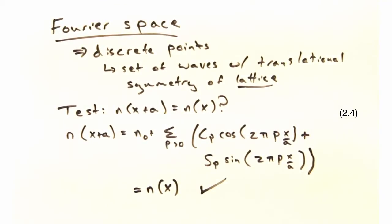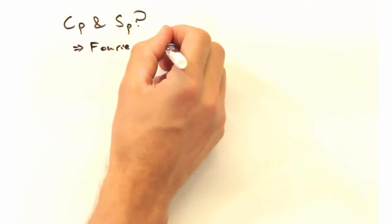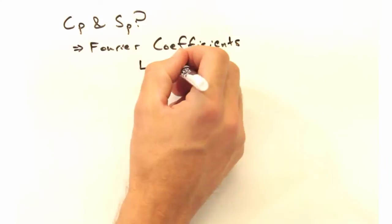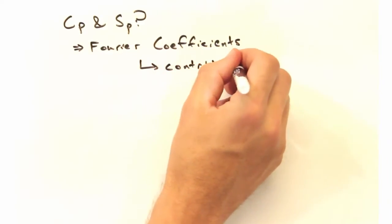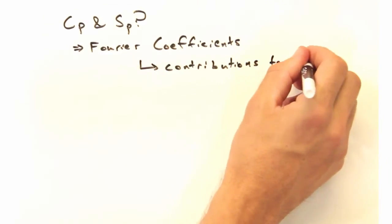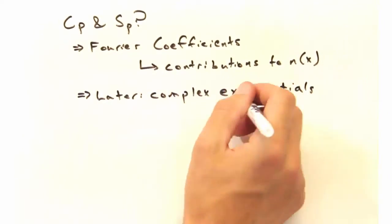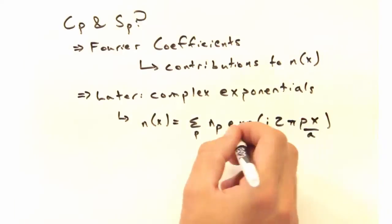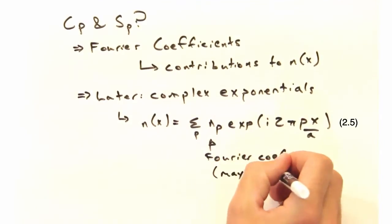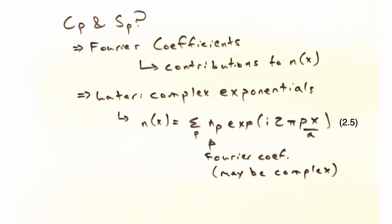But what about these CP and SP coefficients? What do they tell us? In later videos this week, we'll pay special attention to these. But in general, these Fourier coefficients tell us a particular wave's contribution to the whole N. Also in later videos, we'll use complex exponentials instead of sines and cosines for our Fourier series, where the coefficient is allowed to be complex, and we sum over all values of P.